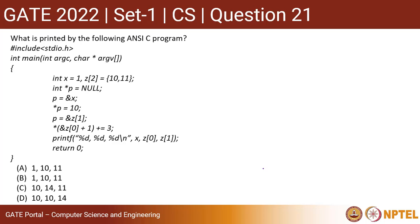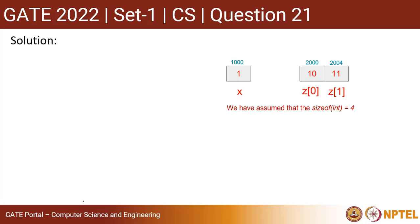Hello everyone, let us discuss a question from GATE 2022 CS paper. This question is from C programming and asks what is printed by the following ANSI C program. This is the program given and you have to find out which is the correct output from the given options. Let us analyze the program step by step.